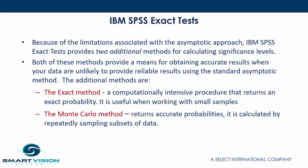Because of the limitations associated with the asymptotic approach, IBM SPSS Exact Test provides two additional methods for calculating significance levels. Both of these methods provide a means of obtaining accurate results when your data are unlikely to provide reliable results using the standard asymptotic method.